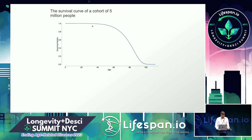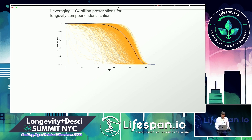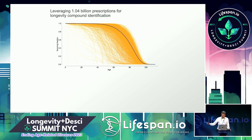We also have access to other types of healthcare registries. This is the death registry in Denmark, based on 5 million people — essentially the survival curve of the Danish population. We combine this with the prescription database to see what doctors are prescribing to patients, allowing us to identify compounds associated with longevity and compounds associated with shorter lifespan. Each line represents a group prescribed the same compound, and there is quite a large variation.